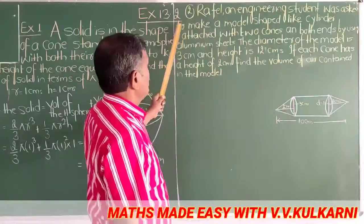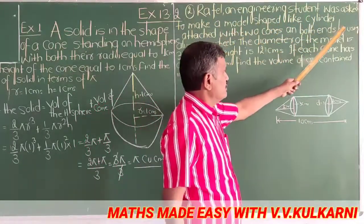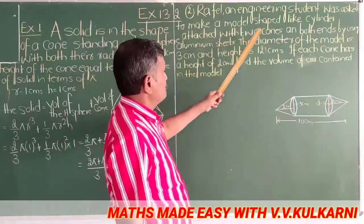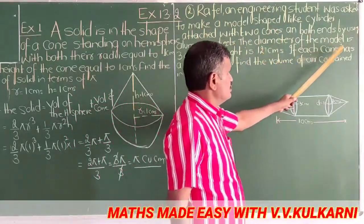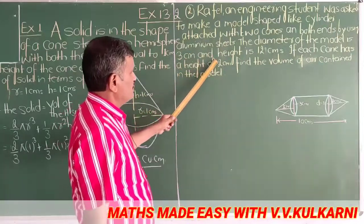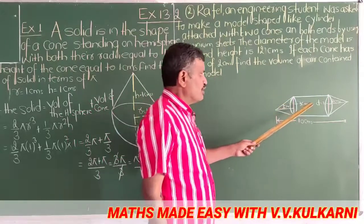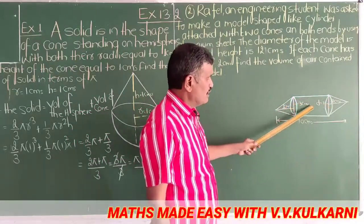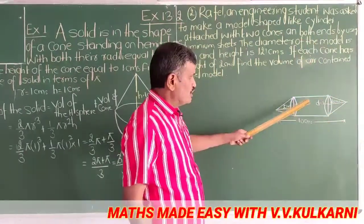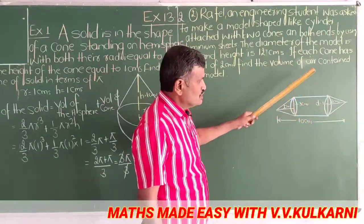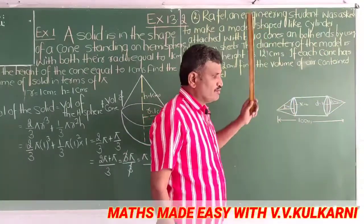A student was asked to make a model shaped like a cylinder attached with 2 cones at both ends using an aluminum sheet. The diameter of the model is 3 centimeter and the height is 12 centimeter. If each of the cones has a height of 2 centimeter, find the volume of air contained in the model. The volume of air equals the volume of the cylinder plus the volume of the 2 cones.